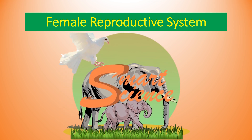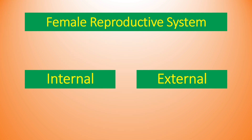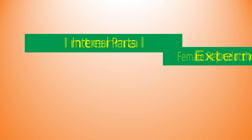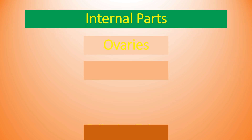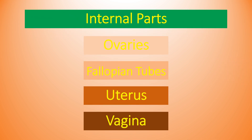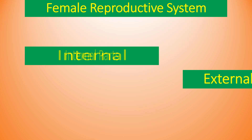Welcome to my channel Smart Science. Today we will discuss the female reproductive system in detail. The female reproductive system consists of both internal and external parts. Internal parts consist of ovaries, fallopian tubes, uterus, and vagina.